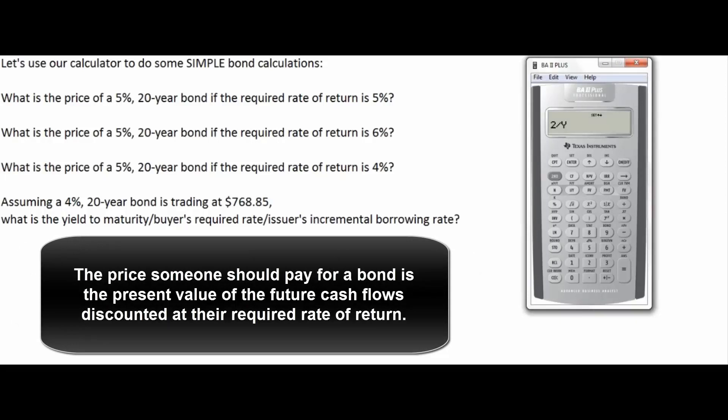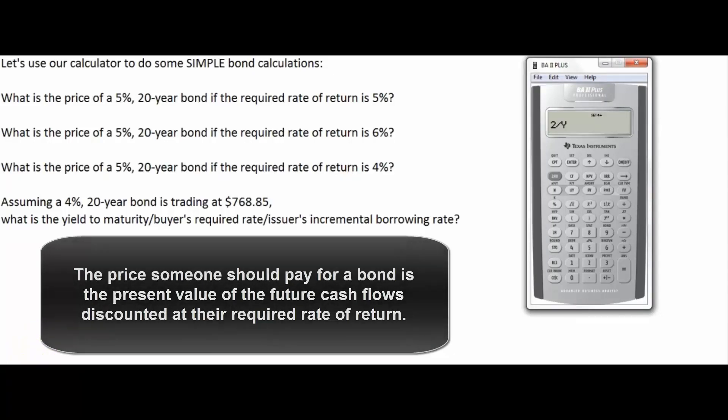The main point of today's topic is that the price someone should pay for a bond is the present value of the future cash flows discounted at their required rate of return. Hope that helps.